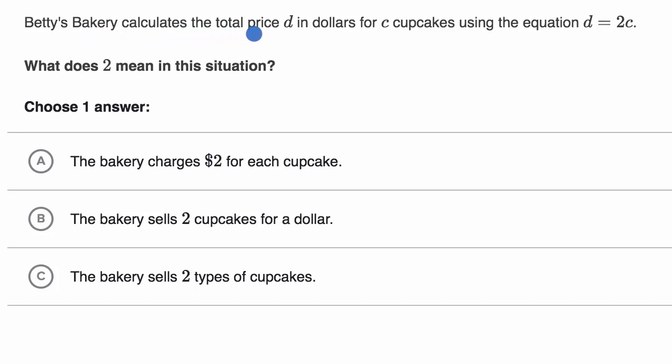Betty's Bakery calculates the total price d in dollars for c cupcakes using the equation d equals 2c. What does 2 mean in this situation? Pause this video and see if you can answer that.